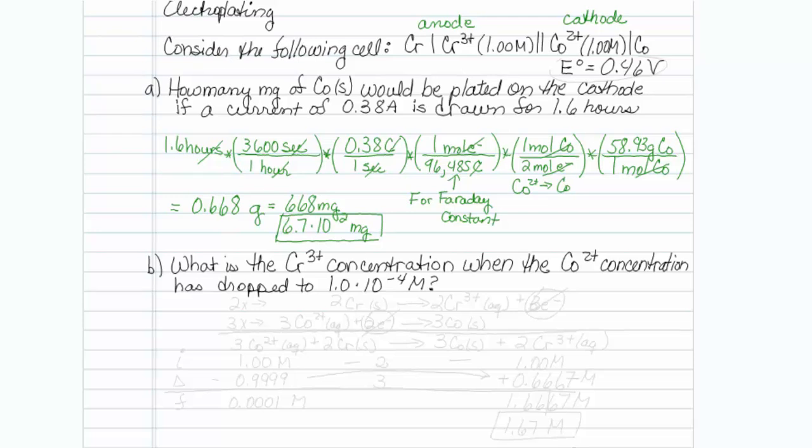So my anode reaction is going from chromium solid, and it is becoming chromium 3+ aqueous, and that ought to be a 3 electron transfer, because oxidation occurs at the anode. The other one should be a reduction. Reduction occurs at the cathode, so that's cobalt 2+ plus 2 electrons going to cobalt solid.